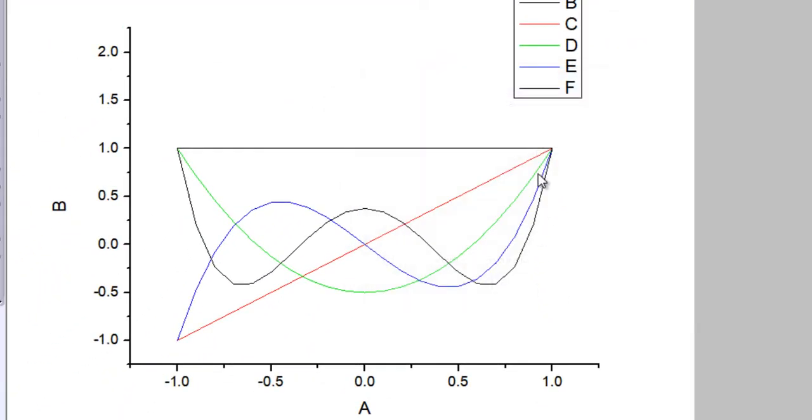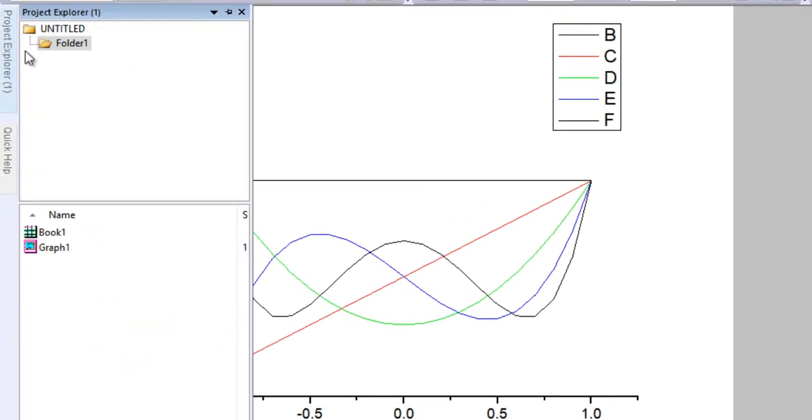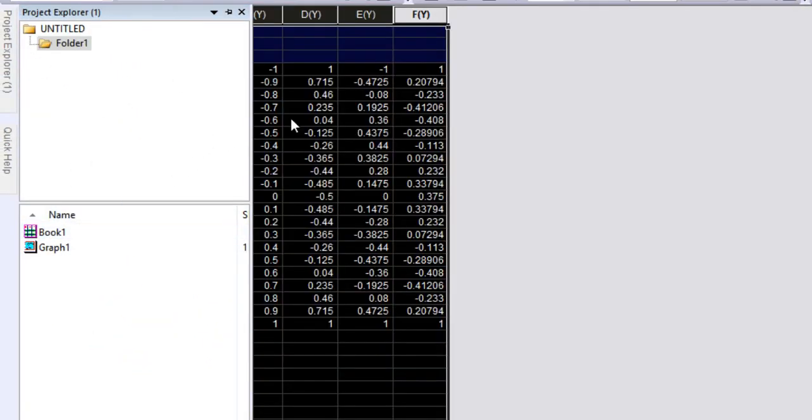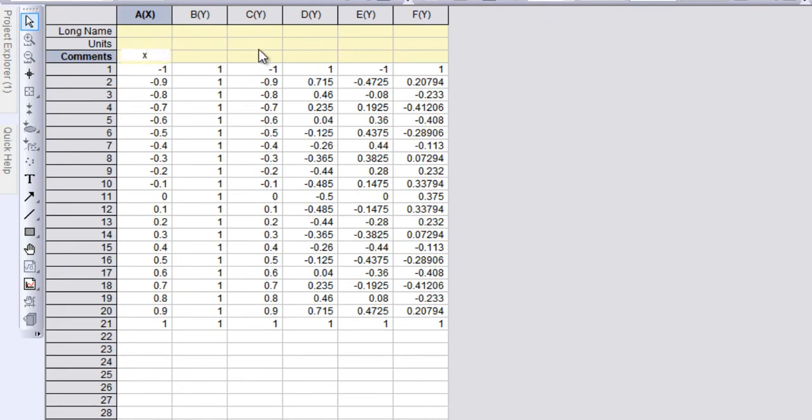Just select all this and right-click, plot line. It's a pretty neat plot. Now to make it more readable, let me perform some labeling. We have x values, and we have P0 of x, then P1 of x, P2 of x, P3 of x, then P4 of x.